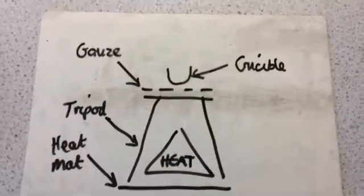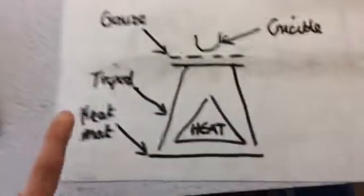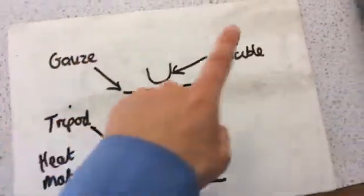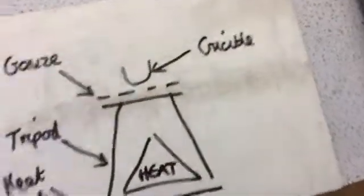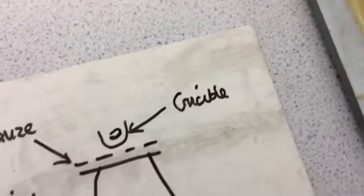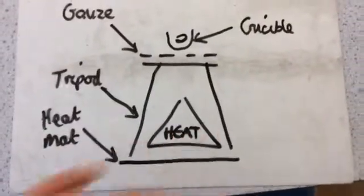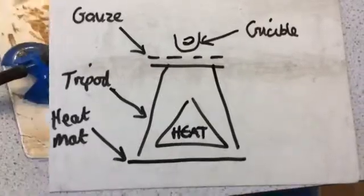Now remember that you should be using a ruler, so when you draw this it will be a bit neater. But we've got our heat mat, our tripod, our gauze and our crucible. You can draw the magnesium in as a little swirl like that if you want to and label it, but you don't have to. Remember Bunsen burner just has the label heat rather than Bunsen burner.